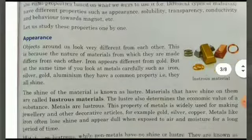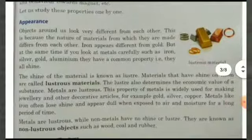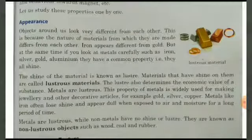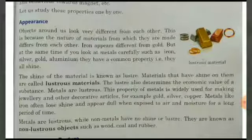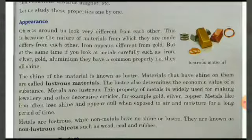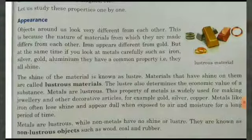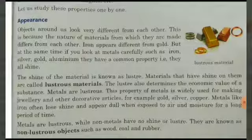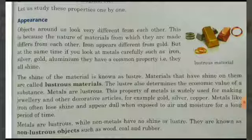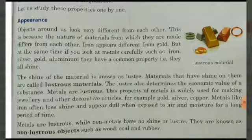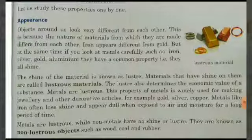The first property is appearance. Appearance means the way objects look. Objects around us look very different from each other because the nature of the materials from which they are made differ from each other. For example, iron appears different from gold.